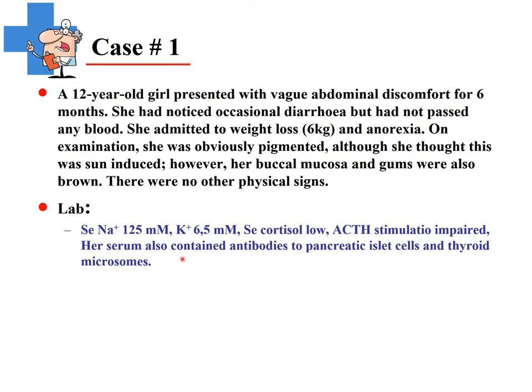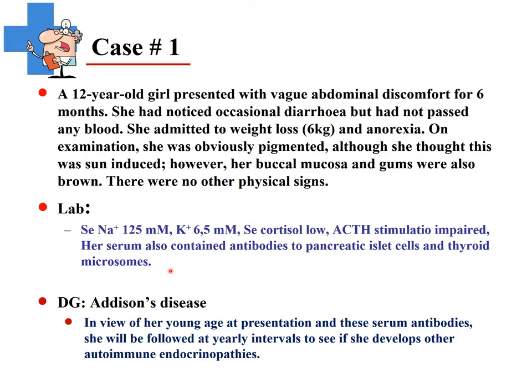Her serum also contained antibodies to pancreatic islet cells and thyroid microsomes. The diagnosis is Addison's disease — chronic glucocorticoid insufficiency. Given her young age and these antibodies, she will be followed yearly for other autoimmune endocrinopathies such as Hashimoto's thyroiditis or type 1 diabetes mellitus, as one autoimmune disease is commonly associated with others.